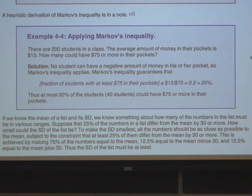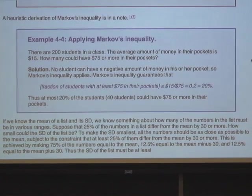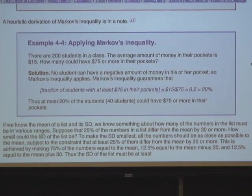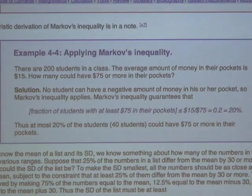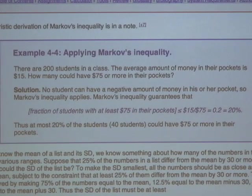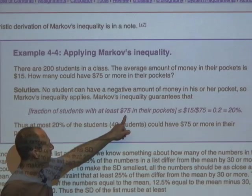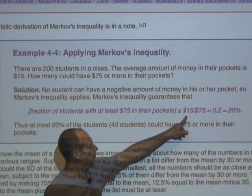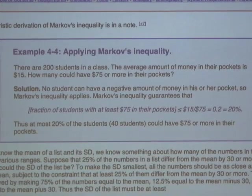Example: 200 students in a class average $15 in their pockets, and nobody carries debt, so amounts are non-negative. How many could have $75 or more? Markov's inequality says the fraction with $75 or more is at most the mean divided by x, which is 15 divided by 75, equal to 0.2 — so at most 20%.